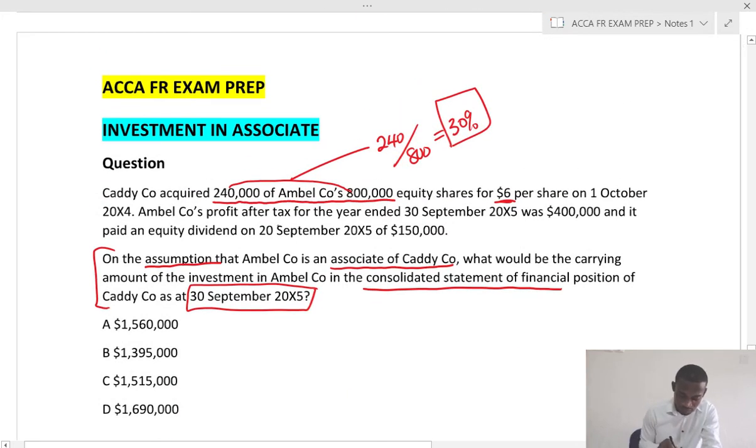Amber Co's profit after tax for the year ended 30 September 20X5 was $400,000 and it paid an equity dividend on 20 September of $150,000. Now look at the date of acquisition which is 1st October to the year end 30 September 20X5. That will give you 12 months, so it's a full year. And you need to identify that. If it's less than 12 months, you time apportion the profit.